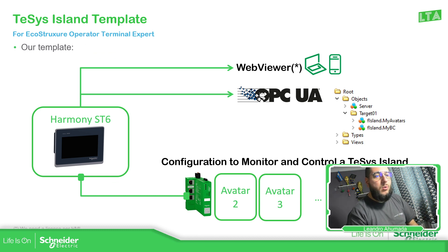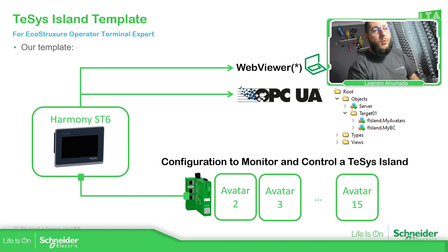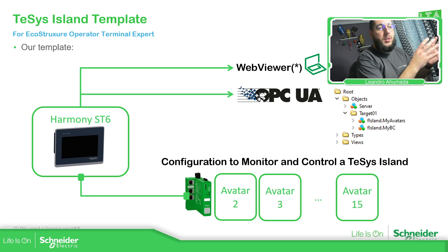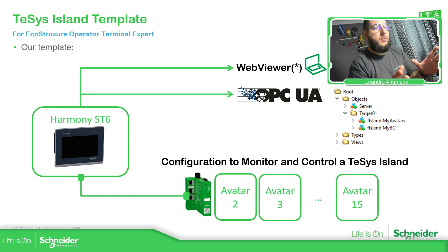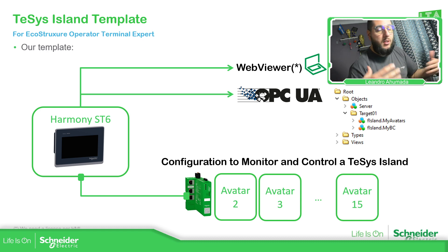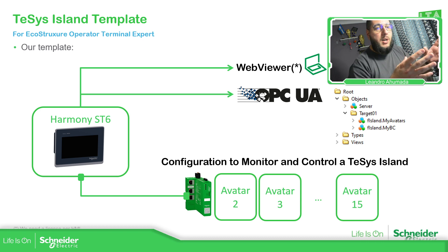The idea of this template is to easily configure on the HMI what we already have in the avatar configuration — simply define it and then just control and monitor. We enter one specific page where we select: avatar 2 is a motor one direction, avatar 3 is a digital input, avatar 4 is something else, and so on. Then on the HMI, we just control and monitor. Simple as that.